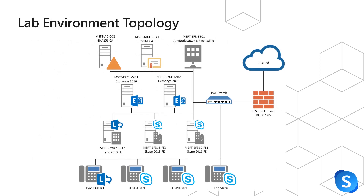When we look at the lab environment topology, we can see that we have our SHA-256 CA role co-located on our domain controller. We have a SHA-1 CA, and our SBC has a SIP trunk to Twilio. We have our two Exchange servers, our Lync 2013 pool, Skype for Business 2015 pool, and Skype for Business 2019 pool. We also have four users in this environment: one assigned to the 2013 environment, one assigned to Skype for Business Server 2015, and two assigned to the Skype for Business 2019 environment. These are all connected via a PoE switch that connects to a PFSense firewall for Internet access.